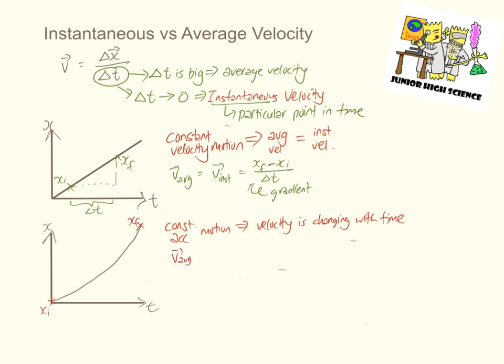Then we apply the formula for average velocity, which is equal to the final position minus the initial position, getting us the displacement, divided by the time interval.